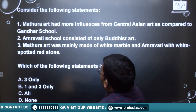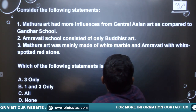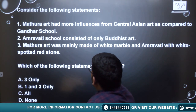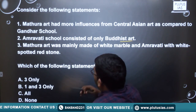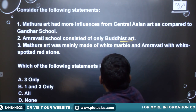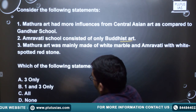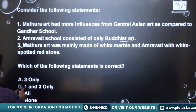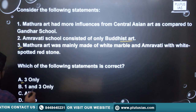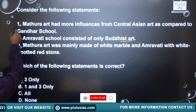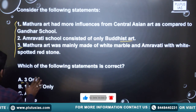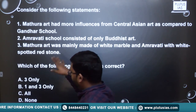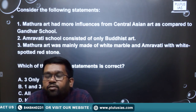Statement one: Mathura art had more influences from Central Asian art as compared to Gandhara. Statement two: The Amaravati school consisted of only Buddhist art. Statement three: Mathura art was mainly made of white marble and Amaravati with white spotted stone. The options are: only statement three is correct; only statement one is correct; statements one and three are correct; all statements are correct; or none of the statements are correct.